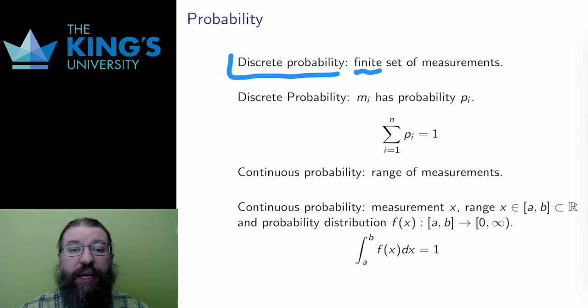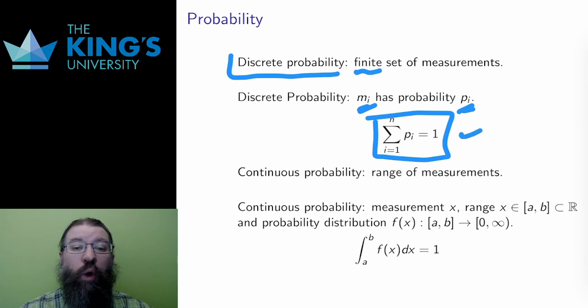Discrete probability works by assigning these percentages to each of the measurements. All of the probabilities have to add up to 100%, which we usually just write as one, treating 50%, say, as one-half, and similar for other percents.